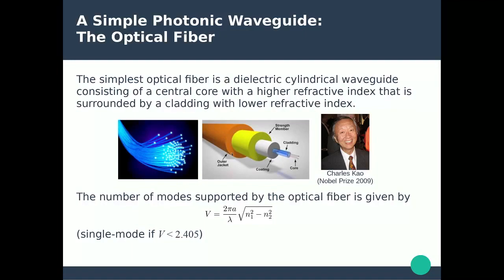An outer jacket protects the fiber from the environment. Looking at the sizes: the core is typically around 10 to 15 microns in diameter, the coating is typically 150 to 250 microns, and the overall fiber including the outer jacket is typically of the order of a millimeter — so quite bulky overall.